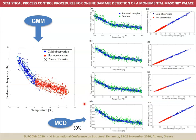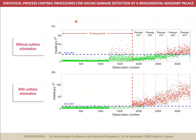The presence of outliers is minimized by using the minimum covariance determinant method and two statistical models using one single principal component per cluster are constructed. On this basis, we constructed the Hotelling's control chart with and without outlier elimination. It is observed that the model without outlier elimination cannot detect the damage until it reaches a reduction of the stiffness around 40 percent. On the contrary, the model with outlier elimination can effectively detect all the different damage scenarios.